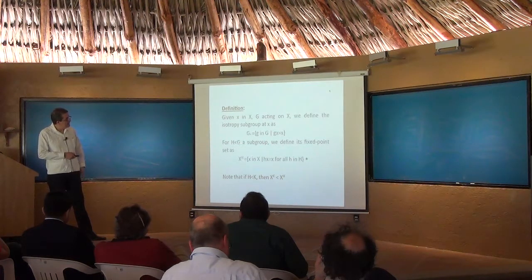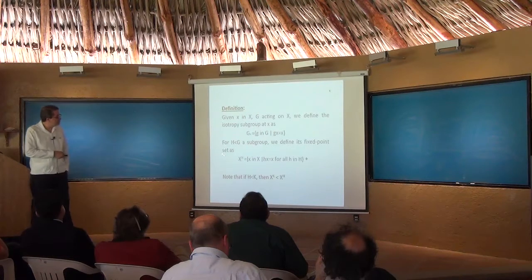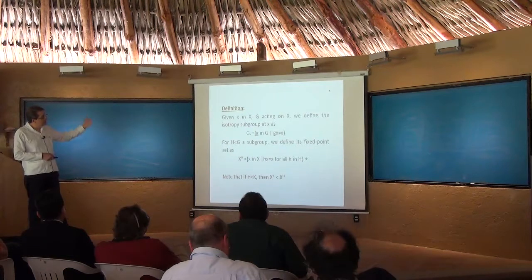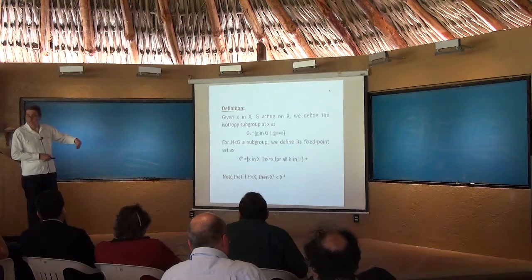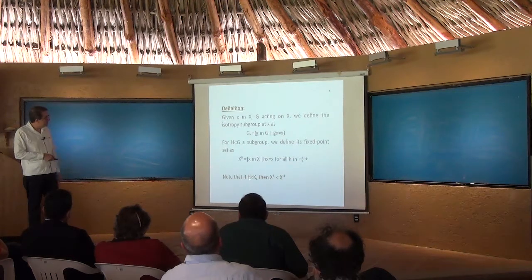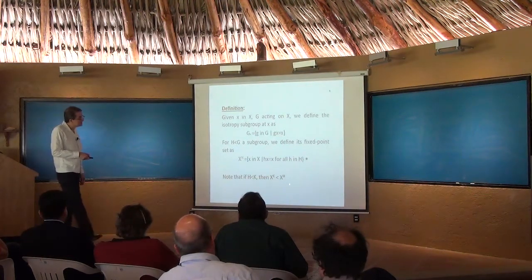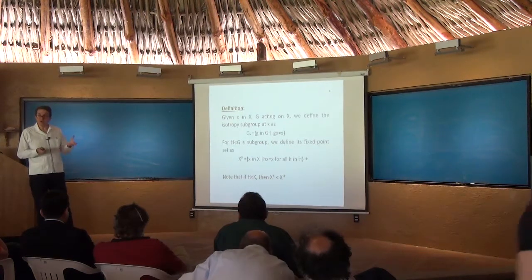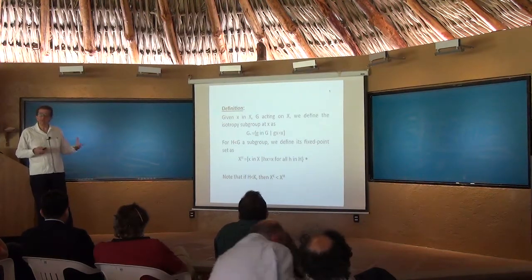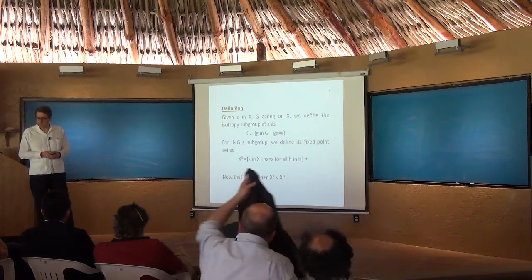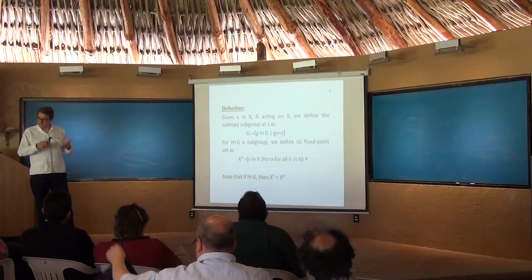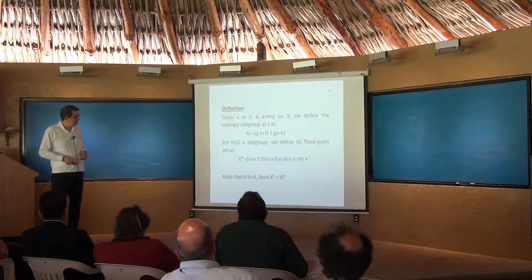Conversely, if H is a subgroup of G, we define its fixed point set as the points in X fixed under all elements of H. This gives a way of going from subgroups of G to subspaces of X. If H contains K, then the K-fixed points are contained in the H-fixed points of X. All the information about the isotropy and fixed point sets is required to understand the equivariant structure of a topological space. There are well-known techniques in algebraic topology — like the equivariant Whitehead theorem — that make this evident.